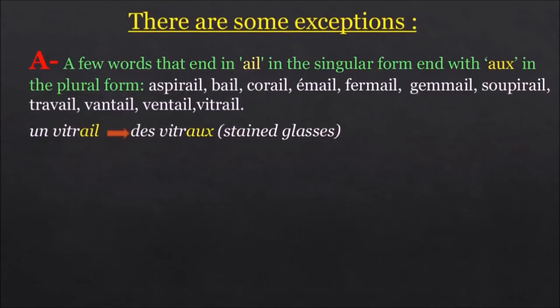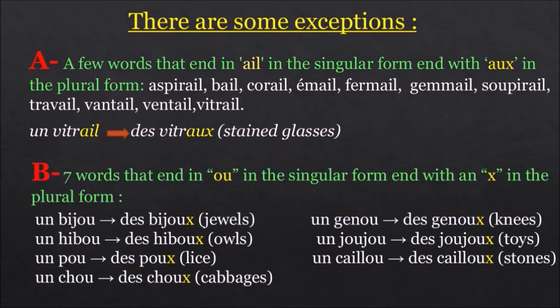There are some exceptions. A few words that end in A-I-L in the singular form end with A-U-X in the plural form. Aspiraille, baille, coraille, émaille, fermaille, gemaille, soupiraille, travail, ventaille, vitrail. For example, un vitrail, des vitraux.